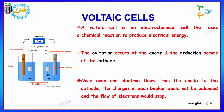Now we will talk about the Voltaic cell. A Voltaic cell is an electrochemical cell that uses a chemical reaction to produce electrical energy. The oxidation reaction occurs at the anode and the reduction occurs at the cathode.